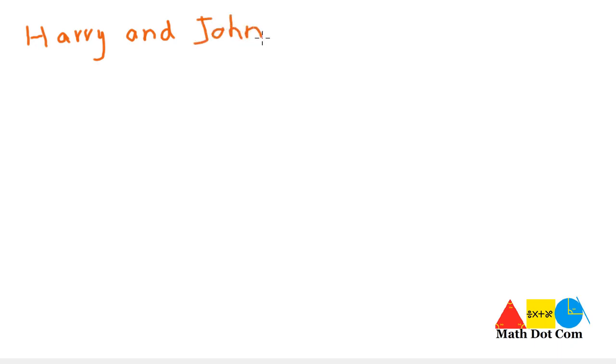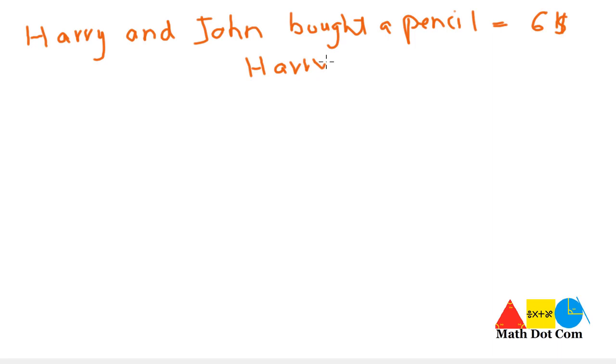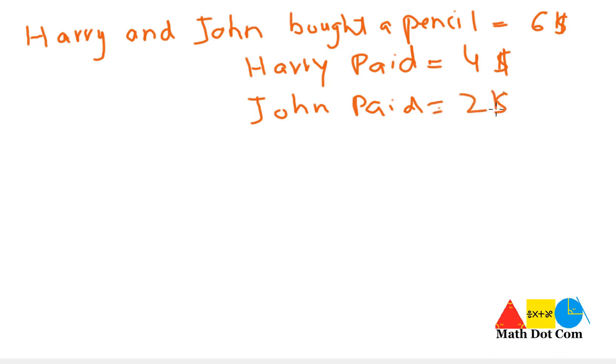Let's take another, slightly more complex example. Harry and John bought a pencil for 6 dollars. Harry paid 4 dollars out of 6, and John paid 2 dollars out of 6. We have to find the ratio between the two amounts paid.